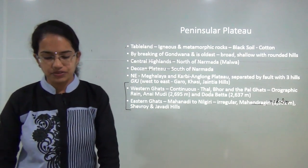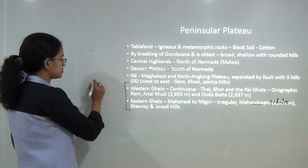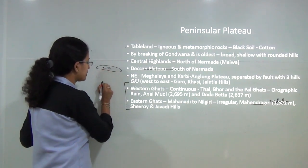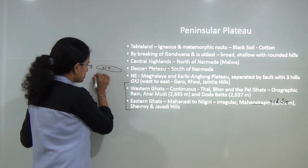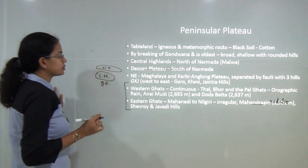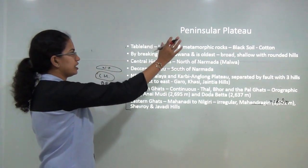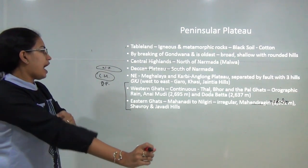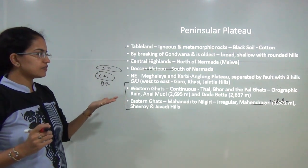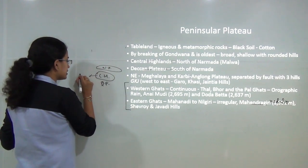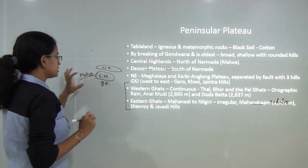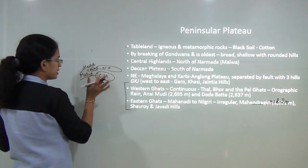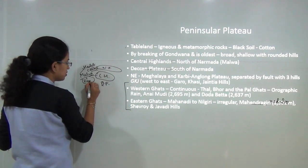Next to the northern plains is the peninsular plateau. An important question is: what is the demarcating feature between the northern plains and the peninsular plateau? The answer is the central highlands. Within the peninsular plateau you have the central highlands and the Deccan plateau. The central highlands lie to the north of the Deccan plateau, typically north of the Narmada river. The region forming the central highlands is known as the Malwa plateau, with its extension being the Hadoti plateau in Rajasthan — mainly around Kota — while Malwa plateau is mainly in Madhya Pradesh.